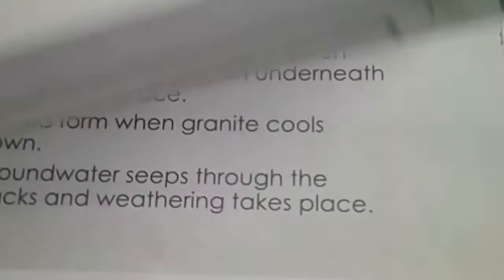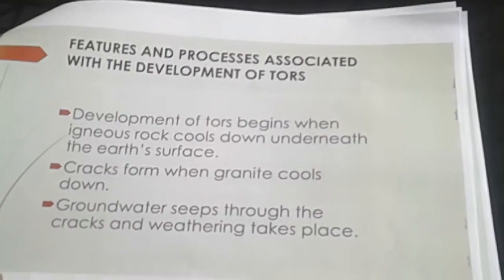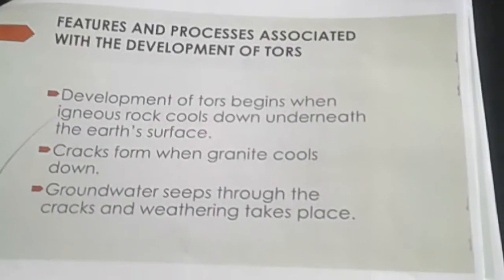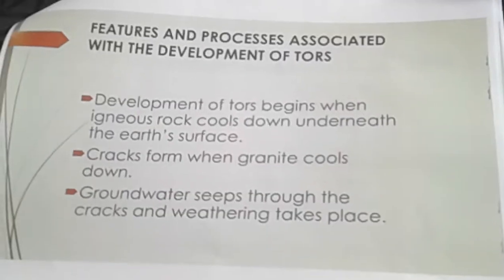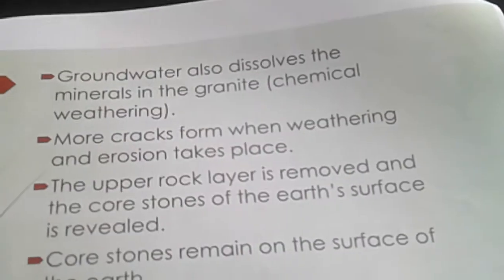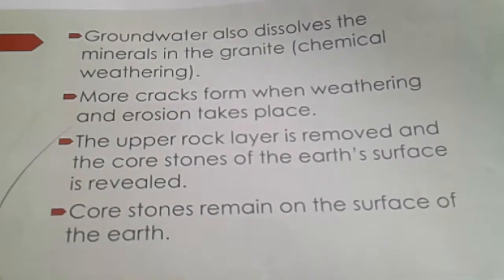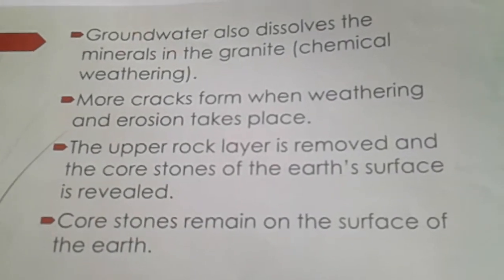When we talk about massive igneous rocks we also talk about tors. The development of tors starts with igneous rocks cooling down underneath the surface. As it cools down it will crack, forming what we call rock joints. As water starts to seep in through those joints, the groundwater dissolves minerals through chemical weathering. More cracks form, and as they widen the joints, core stones begin to form that will remain.